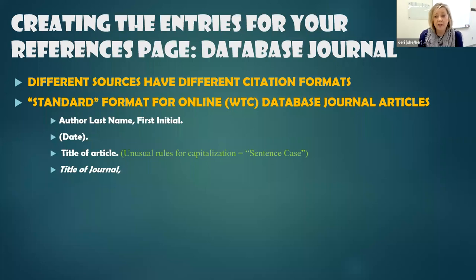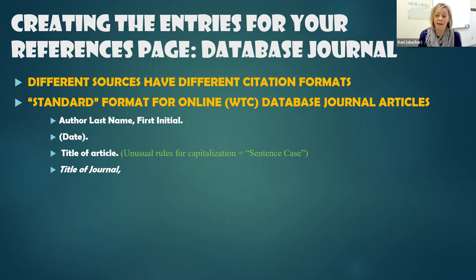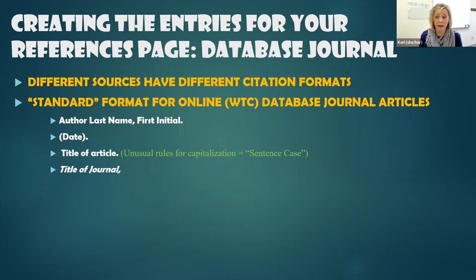Then we're going to look for the title of the journal that it was published in. In all other source types, it's always the title of the article or web page that is in italics. But with a journal article, it's the title of the journal that is in italics. Also note, the journal title does not follow sentence case — it follows traditional capitalization rules, so we capitalize all important words.